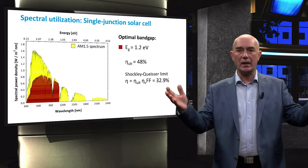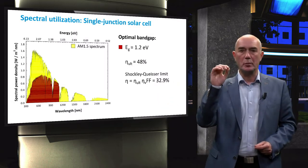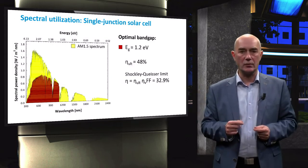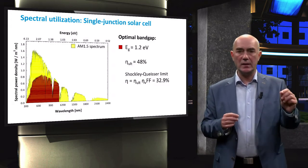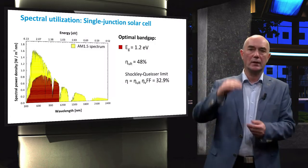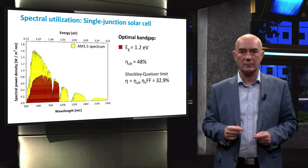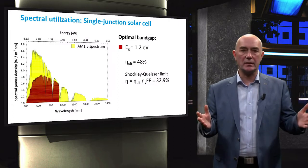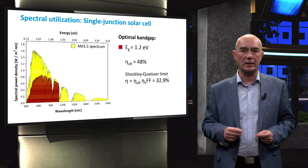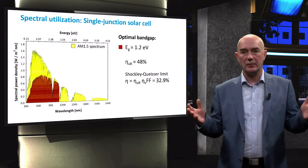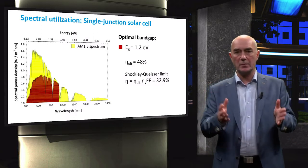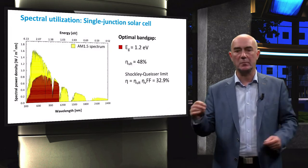To utilize a larger part of the solar spectrum and thus boost the conversion efficiency of solar cells, a so-called tandem or multi-junction solar cell concept is developed and applied. This means that we fabricate solar cells that are based on a stack of two or more solar cells that we call component solar cells. These tandem solar cells have multiple PN junctions and they use semiconductor materials of different bandgap. As a result, photons from a larger part of the solar spectrum can be absorbed. Using this approach, non-absorption and thermalization losses can be strongly reduced.